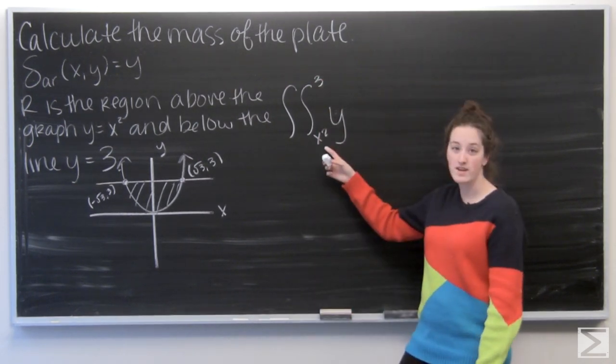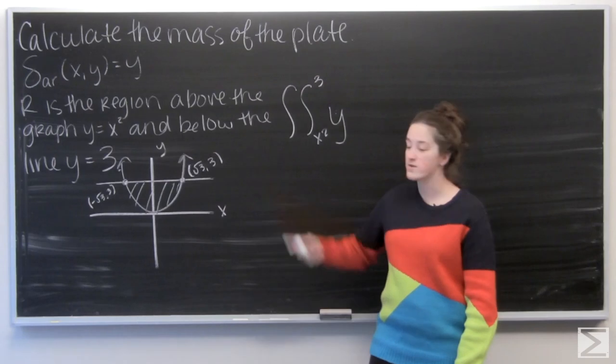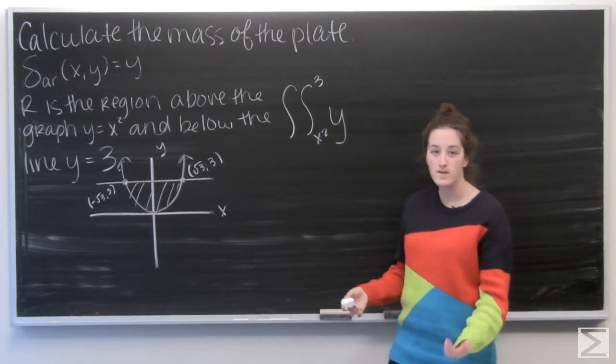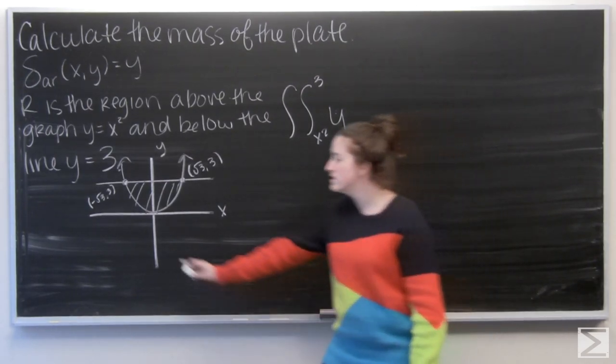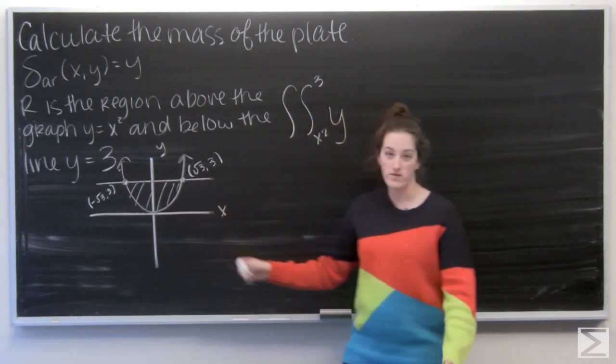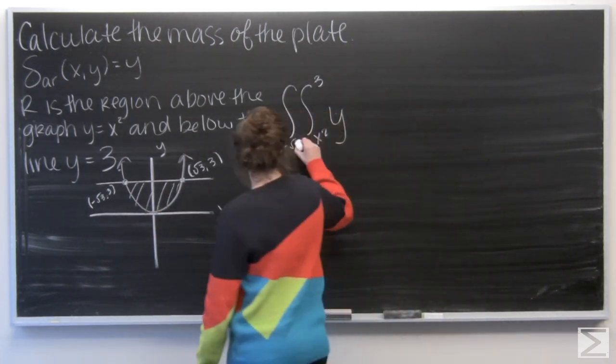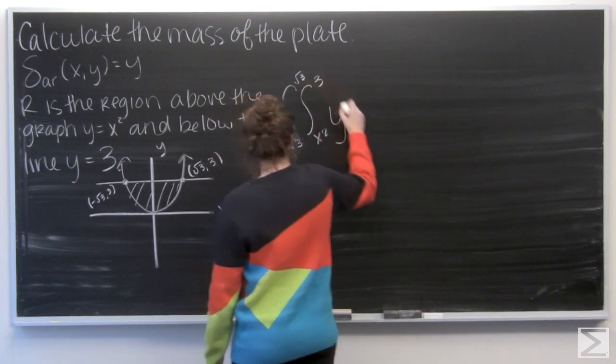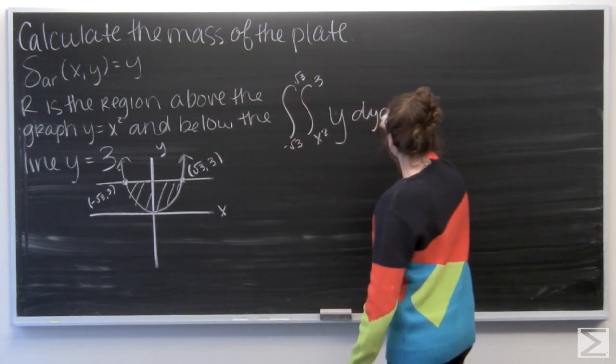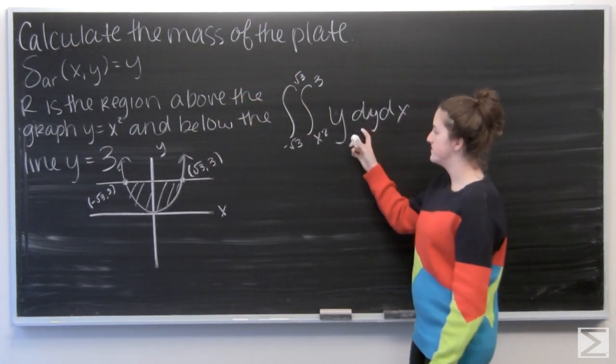So I'll integrate from x squared to 3 since x squared is the bottom function. And then my bounds for x are going to be negative square root of 3 to square root of 3. So dy dx.